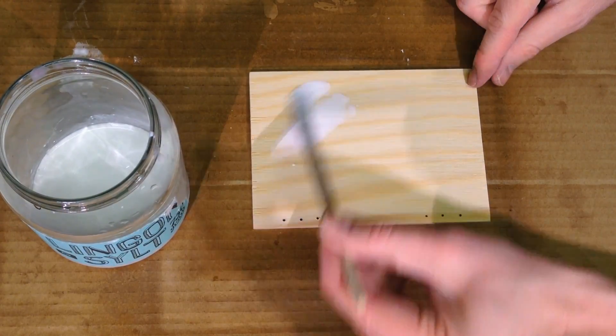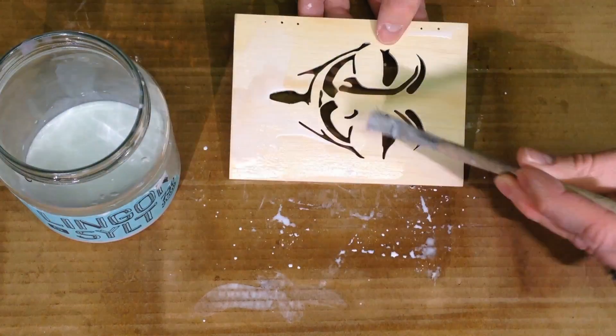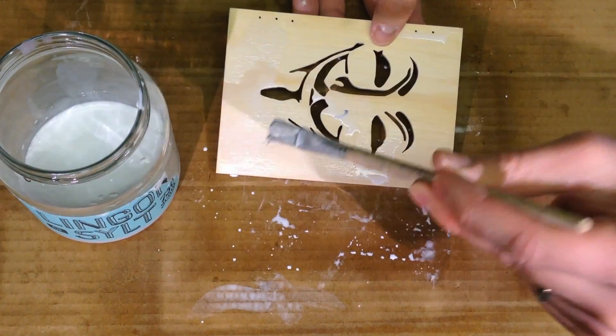I paint one cover with diluted white acrylic paint. This gives the cover a white wash look.